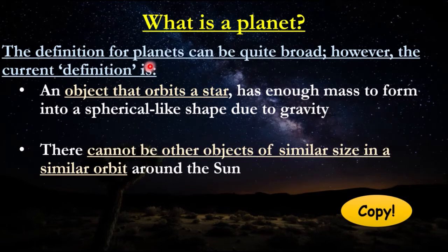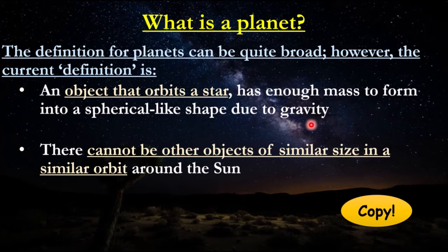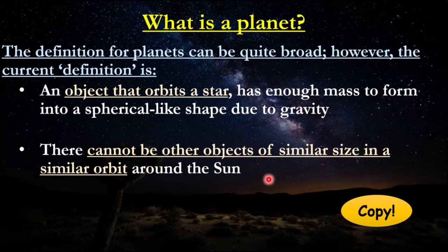So what exactly is a planet? The definition can be a bit broad because the first four planets are quite different from the last four in our solar system. But the basic definition is: it is an object that orbits a star — in this case our Sun — that has enough mass, so it needs to be really big, and it has a spherical-like shape. That shape is caused by the gravitational force of the planet pulling all components inwards. There cannot be other objects of similar size in a similar orbit around the Sun. This will come into play when we talk about why Pluto is no longer considered a planet, and why we have the definition of dwarf planets.